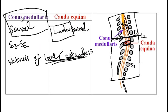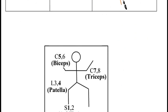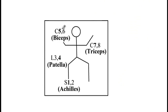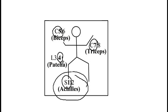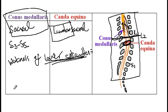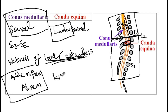One critical difference that will help you differentiate conus medullaris from cauda equina syndrome is the knee and ankle reflexes. Here you can see that the biceps reflex is dependent on C5, triceps on C7, patellar on L4, and the ankle reflex on S1. In patients with conus medullaris syndrome, only the ankle reflex is absent. In patients with cauda equina syndrome, since it is a lumbosacral lesion, both the patellar and the ankle reflex are absent.